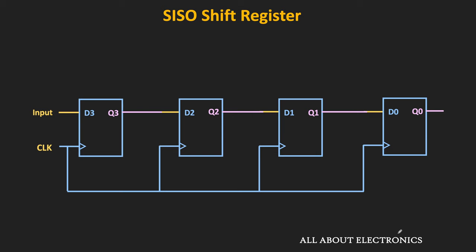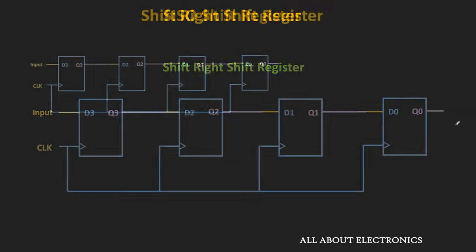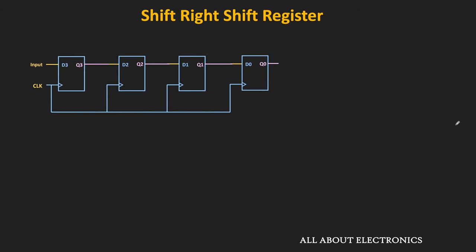This is the diagram of the 4-bit shift-right type of SISO register. Since it is a serial-in serial-out type of shift register, the output of one flip-flop is connected to the input of the next flip-flop. In this shift-right type, the input is applied at the left-most flip-flop while the output is taken from the right-most flip-flop. The left-most flip-flop stores the MSB of the register while the right-most flip-flop stores the LSB.